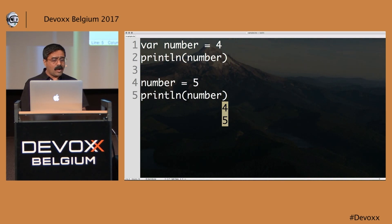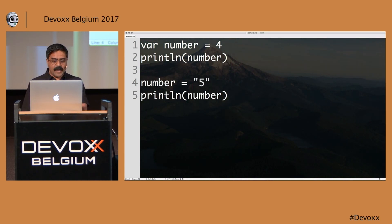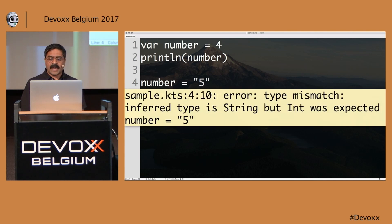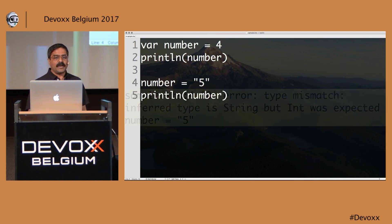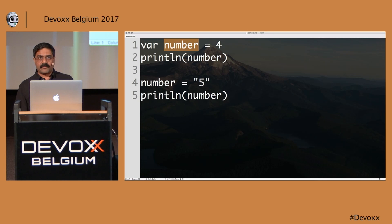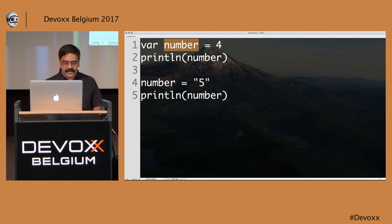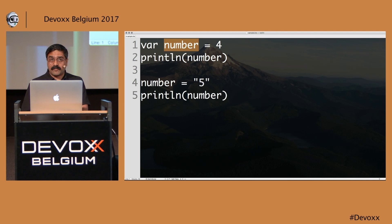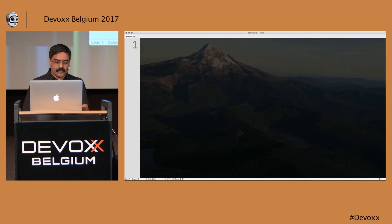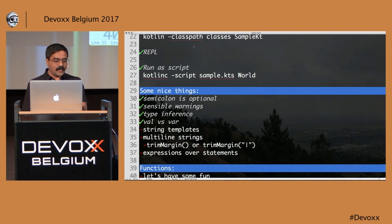What happens if I try to put a string into a var that was inferred as an integer? I get an error — type mismatch — because this was inferred to be an integer, and you cannot assign some other type to it. So type safety still kicks in fairly well.